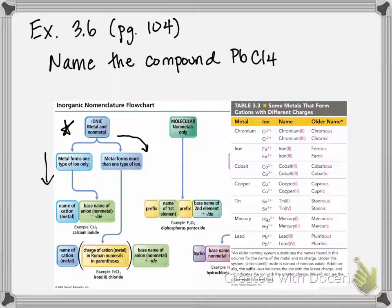Lead, although technically not a transition metal, is a metal that can have more than one type of ion. If you look at table 3.3 displayed here, you can see all of the different metals that can adopt multiple charges — chromium, iron, cobalt, copper, tin, mercury, and at the bottom we have lead.